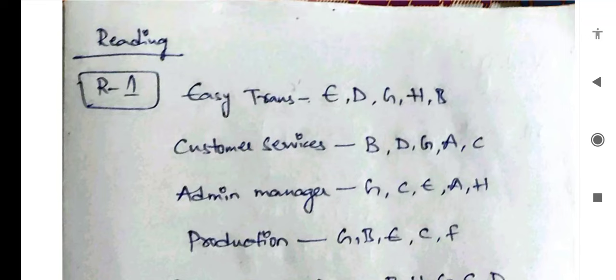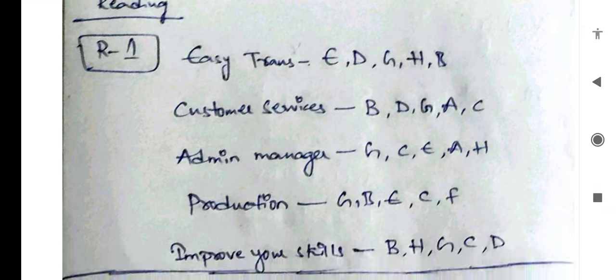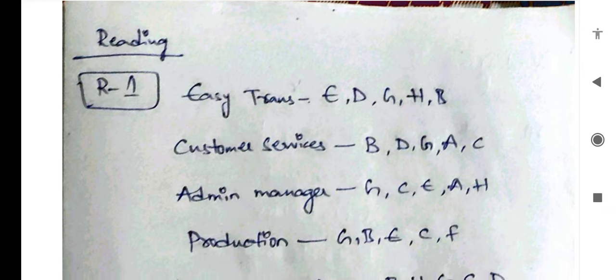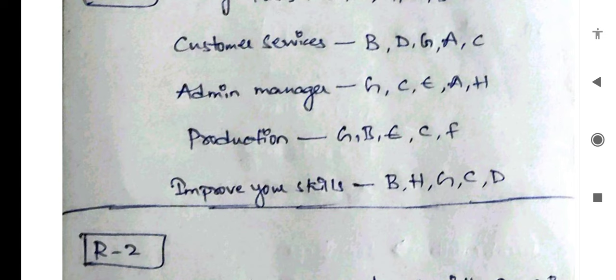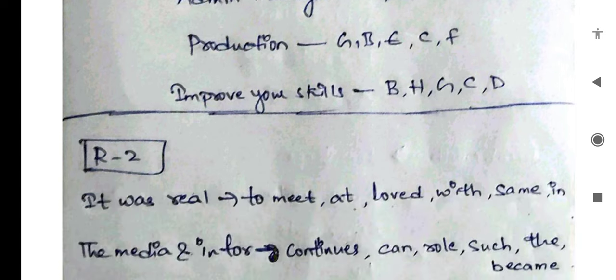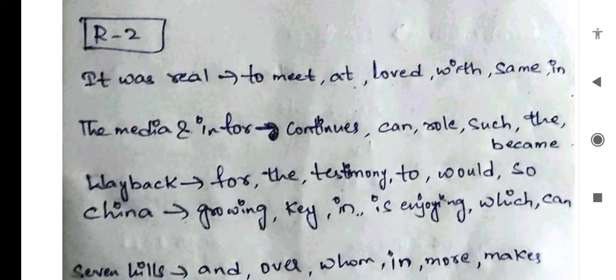Hello everyone, welcome back to the channel. In this video I will share the PDF for course ID 58755 — Art of Articulations — a very important course that you have to do. This PDF covers reading comprehensions, reading cooperation answers, and is a transaction customer software admin manager production — improve your skills R2.